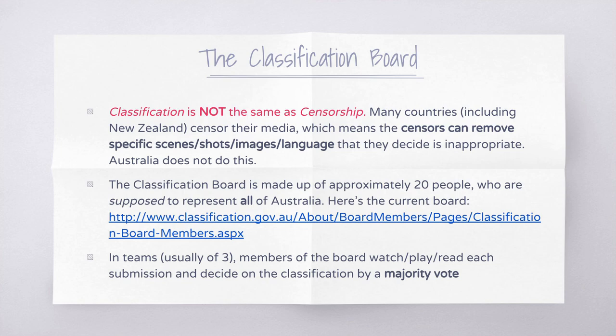Instead, in Australia the Classification Board simply advises on what content is in a film — they don't actually change the product itself. The Classification Board is made up of around 20 people who are supposed to represent all of Australia. However, if you look at the board members, they don't necessarily represent the cultural, religious, or age diversity of Australia. They are typically middle class, well-educated, and mostly white people based in Sydney.